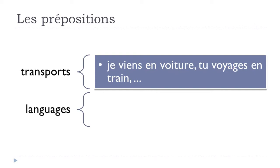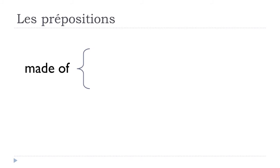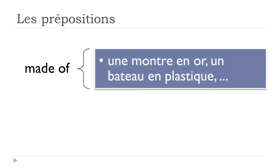EN is also used for languages — for instance, 'he speaks in Spanish' is 'il parle en espagnol', or 'this book is in English.' Another use is to introduce the material something is made of: 'une montre en or' — a watch made of gold. 'Un bateau en plastique' — a boat made of plastic.